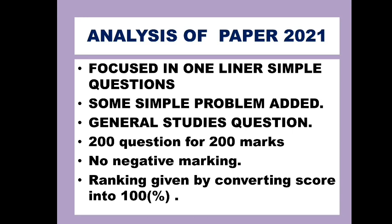The paper was focused on one-liner simple questions with basic fundamental definitions or concepts. If someone goes through only the question bank, they might not have a good approach; question banks alone are not sufficient, so thorough reading of notes is also required. Some simple problems were added like moisture content, dry basis and wet basis conversion, and simple mathematical problems like Laplace. General studies questions were also asked — national parks, states, disaster management, etc. The overall paper consists of 200 questions for 200 marks with no negative marking, and ranking is given by converting the score into 100 percentile.